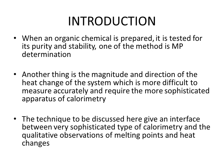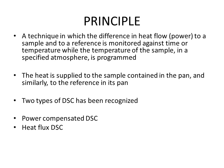Whenever an organic compound is prepared in a laboratory, it is tested for its purity and stability. One method is melting point determination. Another aspect is the magnitude and direction of heat change of the system, which is more difficult to measure accurately and requires a more sophisticated apparatus — that is calorimetry. DSC is a technique that provides an interface between sophisticated calorimetry and the qualitative observations of melting points and heat changes.